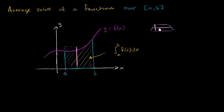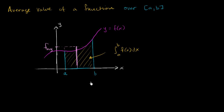So this would be the average width, which in a trapezoid like this would just be halfway between. This function is not linear, so it's not necessarily going to be halfway in between, but it's that same idea. So this height right over here, we could call this the function's average. How could we use all of this to come up with a formula for the average of a function over this closed interval?